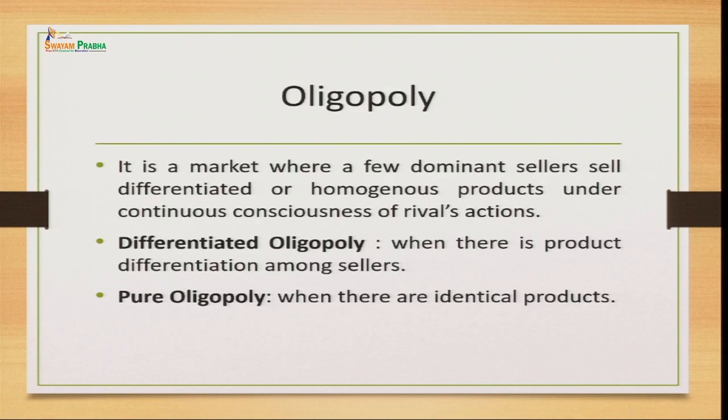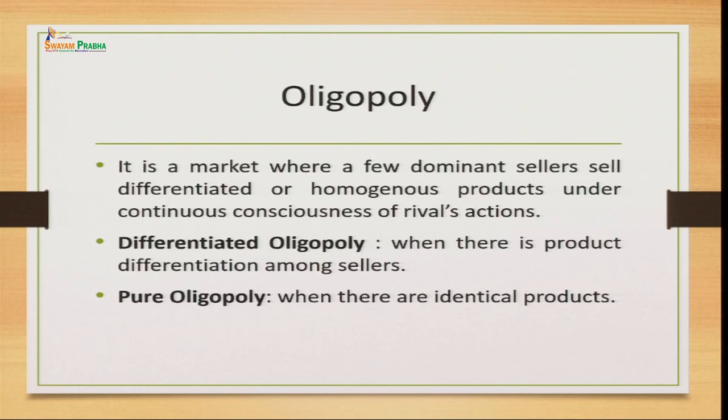The oligopoly market is one where we have few dominant sellers. They are not very large in number but they are the dominant sellers. They can sell differentiated or homogeneous products. Oligopoly firms can produce products that are of similar nature — homogeneous goods — or they can be heterogeneous goods. If the products amongst the sellers are different, we call it differentiated oligopoly, whereas if the products are homogeneous and identical to each other, it is called pure oligopoly.